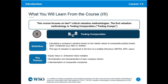Lastly, another key theme is going to be calendarization of comparable companies. Different companies report their financials at different dates and have different end-of-year and quarterly reporting. So again, to make things apples-to-apples, you want to make sure the timing of financials lines up — in particular for last 12 months, or LTM. You want to make sure it all collapses to the same date.